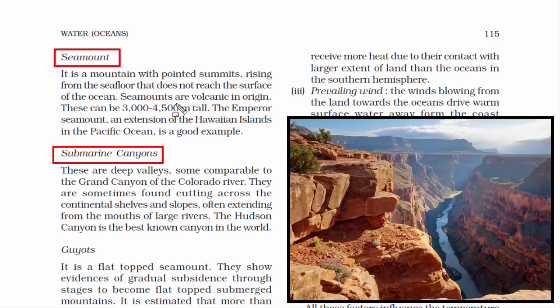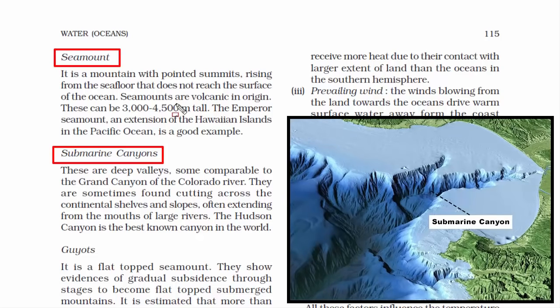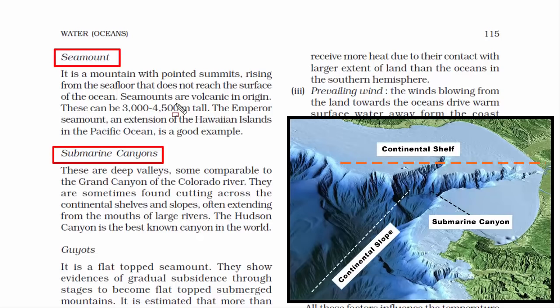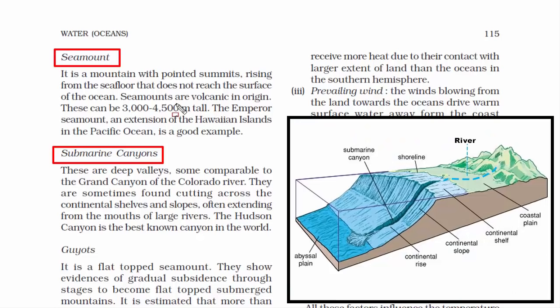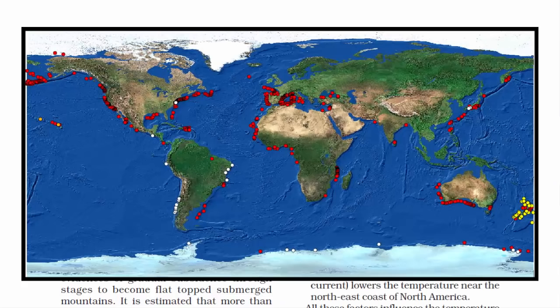The third minor ocean relief feature is submarine canyons — deep narrow valleys with steep sides, typically formed by weathering and erosion by rivers. Submarine canyons are formed at the junction between the continental shelf and continental slope, where large rivers with strong streams drain into the sea, bringing massive amounts of sediments. The water pressure cuts deep into the seabed, creating a deep narrow channel. Because of their complex topographic features, submarine canyons are considered major reservoirs of marine biodiversity.